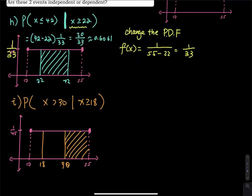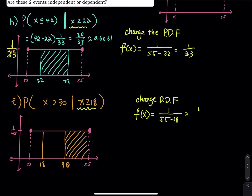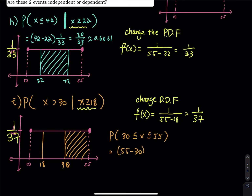So we change the PDF. The new f(x) = 1/(maximum − given) = 1/(55 − 18) = 1/37. That changes the height of the rectangle. Then the probability that x is between 30 and 55 equals (55 − 30) × (1/37) = 25/37, which is approximately equal to 0.6757.